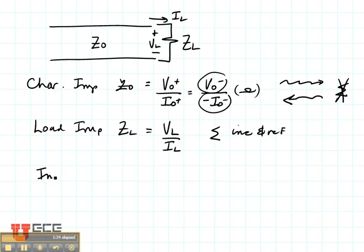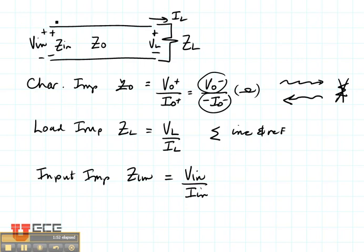The input impedance is like the load impedance. The input impedance we're going to call ZN and that is going to be right here. That's the location of ZN. That is going to be VN divided by IN. VN is the input current to the transmission line.